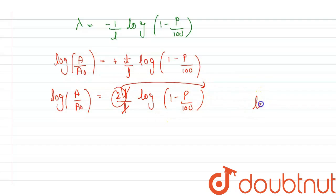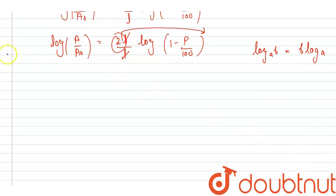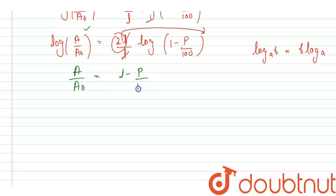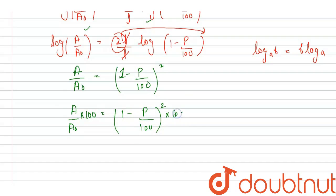Using the log property that log A^B equals B log A, we get log(A upon A0) equals log(1 minus P upon 100) squared. Removing log from both sides, A upon A0 equals (1 minus P upon 100) squared. To find the percentage, A upon A0 times 100 equals (10 minus P upon 10) squared. This is the required percentage remaining after 2L years.